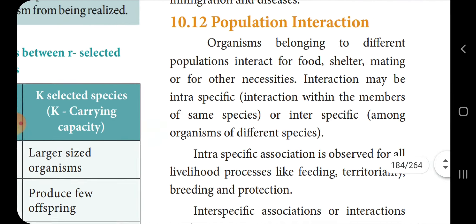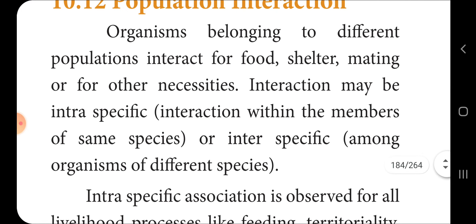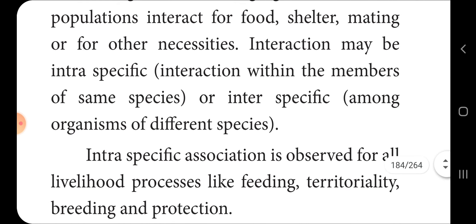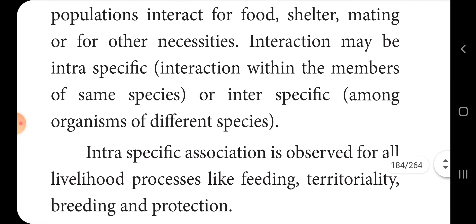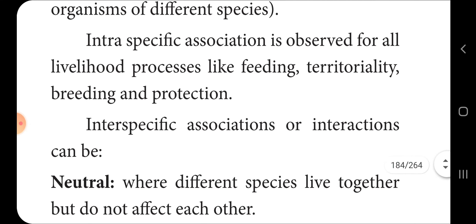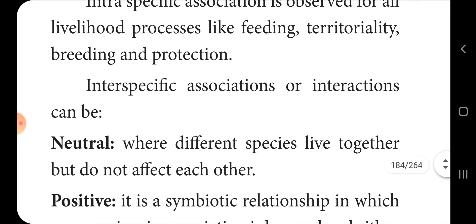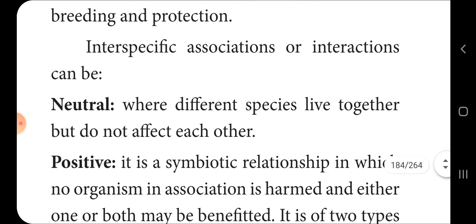Population interaction — 10.12. Organisms belonging to different populations interact for food, shelter, mating, or for other necessities. Interactions may be intraspecific (within members of the same species) or interspecific (among organisms of different species). Intraspecific association is observed for all life processes like feeding, territoriality, and breeding and reproduction. Intraspecific interactions can be neutral, positive, or negative.